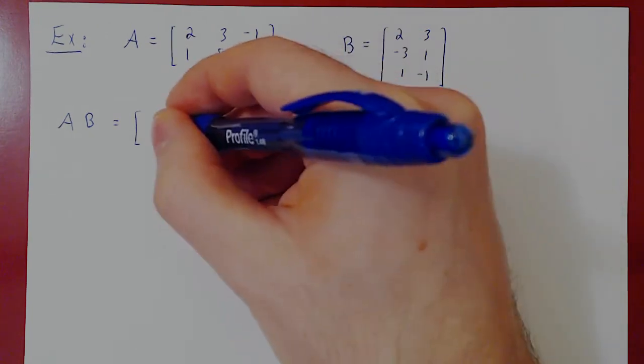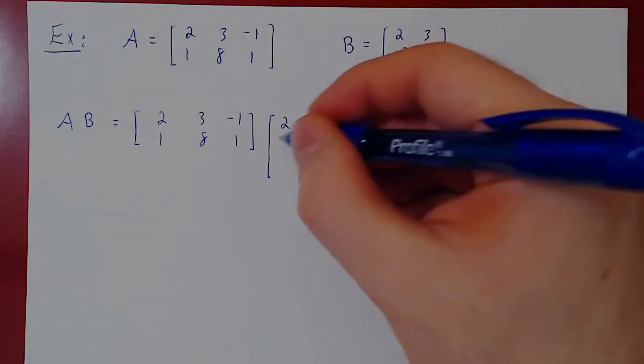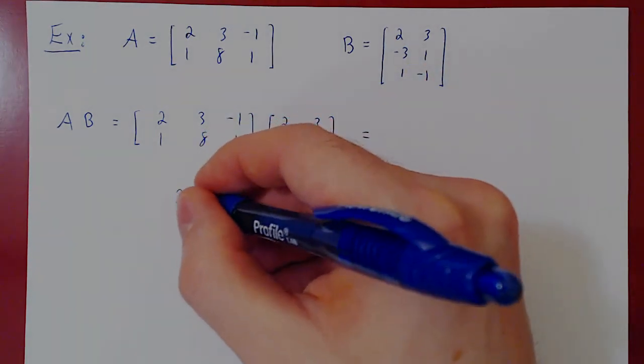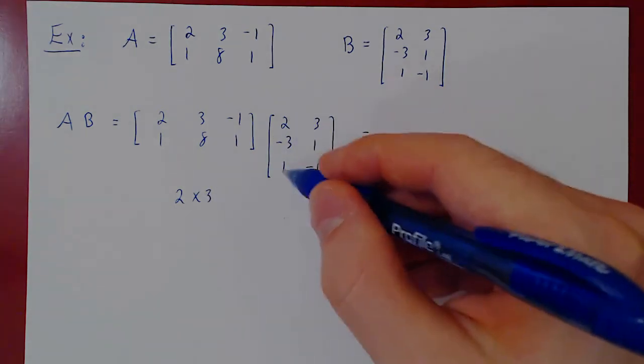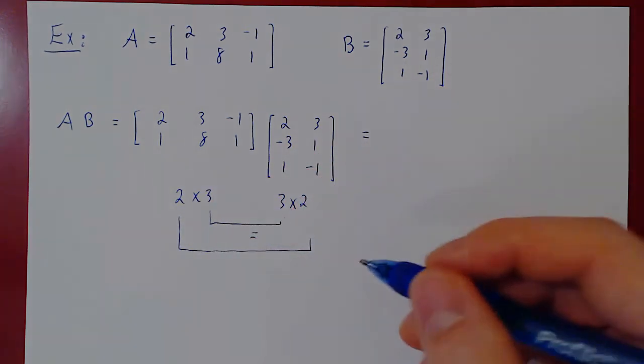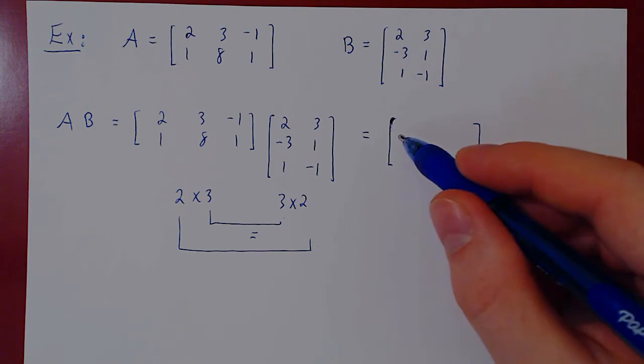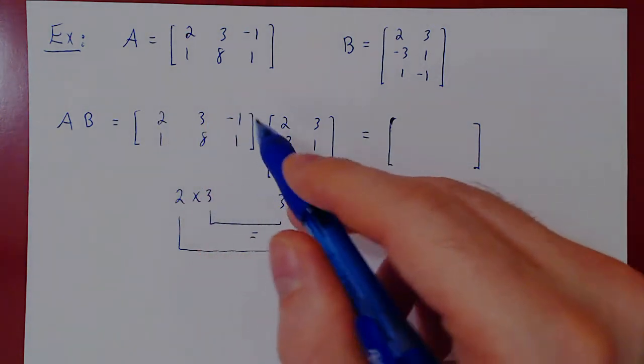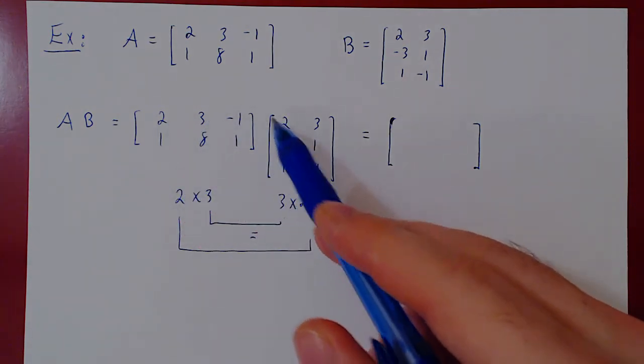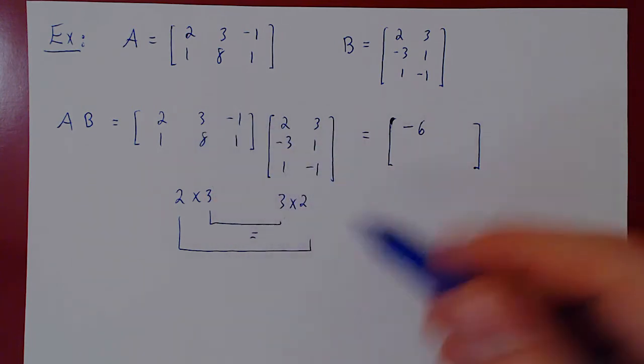So 2, 3, negative 1, 1, 8, 1. Times B, 2, 3, negative 3, 1, 1, negative 1. Well, let's see. A is a 2 by 3 matrix. B is a 3 by 2 matrix. Multiplication is defined, and the result would be a simple 2 by 2 square matrix. Well, let's construct the first row of our new matrix by fixing the first row of A and going through both columns of B. We will have 4, minus 9, negative 5, minus 1, negative 6. Then, 6, plus 3, 9, plus 1, 10.